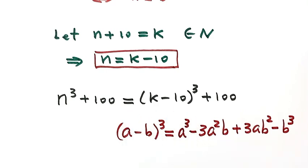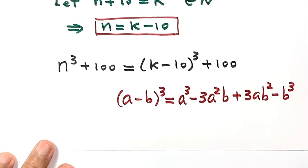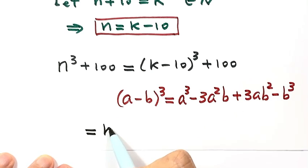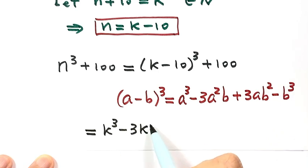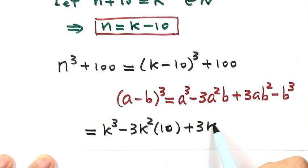So now let's continue this equal sign. n to the third. Then here just k to the third minus 3k squared times 10 plus 3k times 10 squared minus 10 to the third. Then here plus 100.